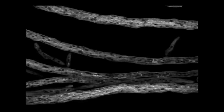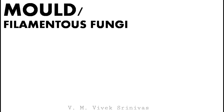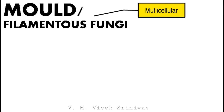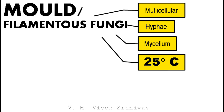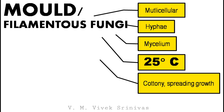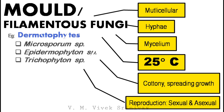In summary, molds are multicellular structures that give rise to filamentous structures called hyphae, which form a mat-like structure called mycelium. They grow well at 25°C (room temperature); after incubation they form cottony and spreading type of growth; and reproduction happens by both sexual and asexual processes. Dermatophytes such as Microsporum, Epidermophyton, and Trichophyton are examples of mold.